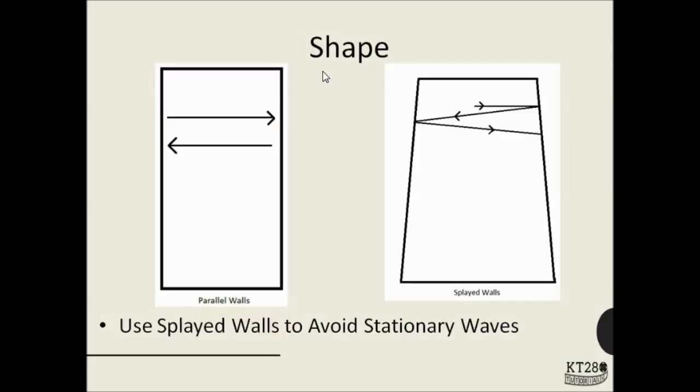Now, let us see how shape affects the acoustics of auditorium. In parallel walls, the problem is the sound waves may get reflected again and again and they will interfere with themselves causing stationary waves. And these stationary waves may disturb the auditorium. The production of stationary waves need to be avoided.